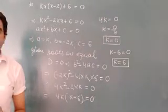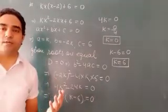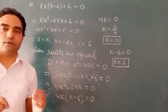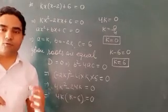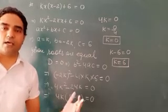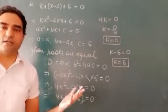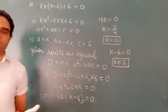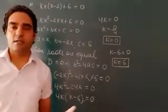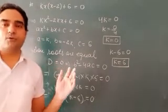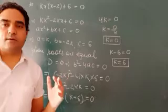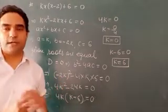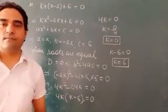So the two values of k are 0 and 6. Many such questions can come asking you to find the value of k, p, c, or any other variable when roots are equal. In all such cases, apply D = 0, meaning b² - 4ac = 0, and solve from there. Okay, thank you.